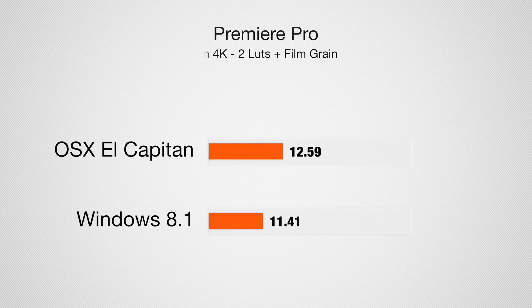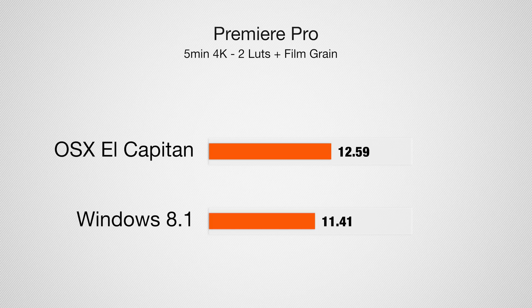Let's move on to the same 5-minute clip, but this time it's the 4K version, also with 2 LUTs and film grain applied. Running Premiere Pro on OSX, we're getting 12 minutes and 59 seconds — basically 13 minutes. On the Windows side, 11 minutes and 41 seconds. Once again, Windows is doing a better job with Premiere Pro, but the percentage difference is smaller.